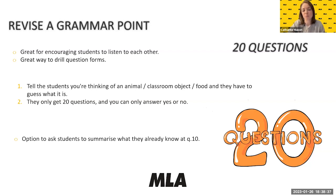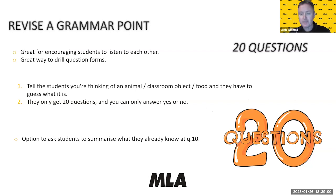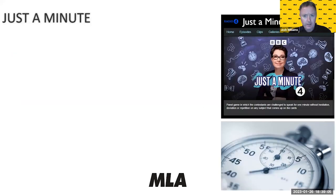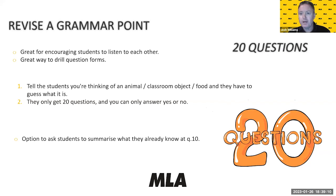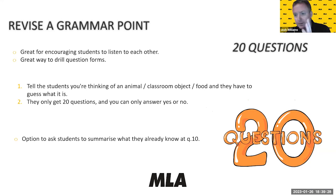Putting all that information together often speeds them on a bit and makes it much clearer what the animal is. A useful rule: students can't ask what the thing actually is until they've asked a question that can only be true for that object. So instead of 'Is it a phone?', they'd ask 'Is it something you use to call people?' That way they don't waste questions guessing randomly — 'Is it a desk? Is it a chair?'